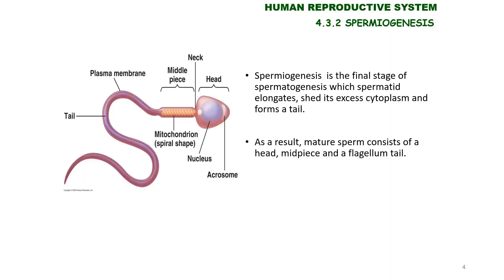Spermiogenesis is the final stage of spermatogenesis where the spermatid elongates and sheds its excess cytoplasm to form a tail. As a result, we have a mature sperm that consists of a head, neck, and tail. In the head, you can find the nucleus as well as the acrosome. Inside the acrosome, there are hydrolytic enzymes that will be used during the fertilization process.